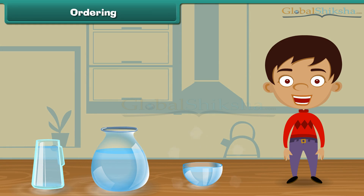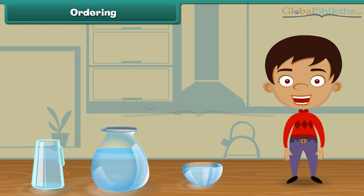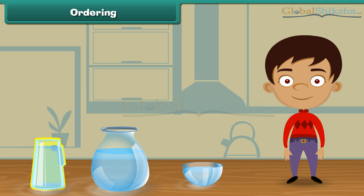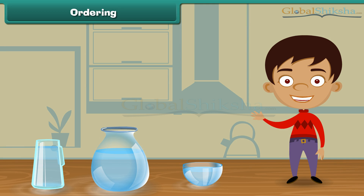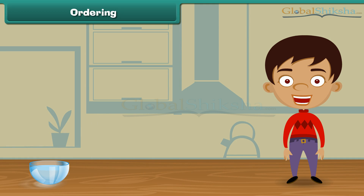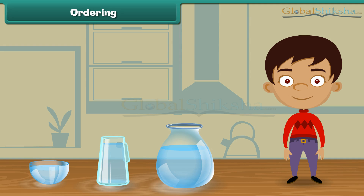Friends, we have three different vessels. Which vessel holds the least water? Yes, you are right. The bowl holds the least water. A jar holds more water than the bowl. And the pot holds more water than the bowl and the jar. Let us now arrange these vessels in increasing order. Bowl comes first because it holds the least water. The next in the row is the jar as it holds more water than the bowl. At last we place the pot because it holds more water than the bowl and the jar.